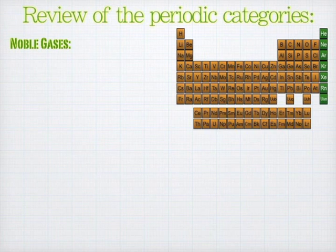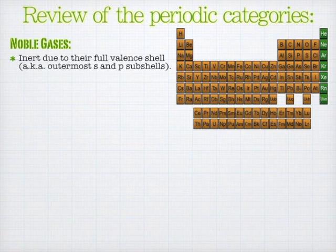Noble gases are considered inert, and they're inert because they have a full outer shell, which means they have full outermost S and P subshells. And it's all outermost S and P, not necessarily what the outermost shell is.